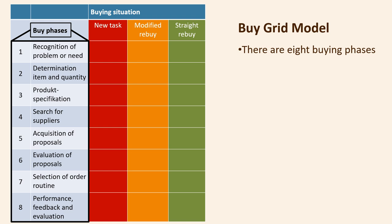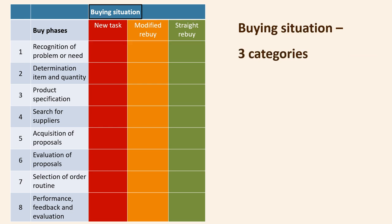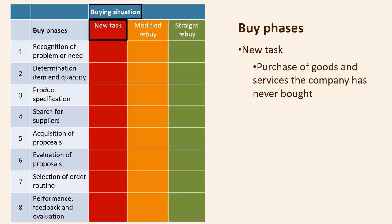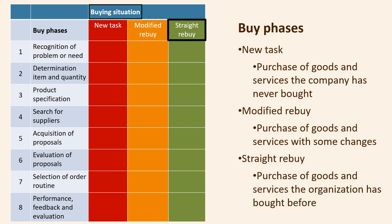The BuyGrid model contains eight buying phases and three categories of buying situations: new tasks, modified rebuy, and straight rebuy. New tasks involve buying goods and services the company has never previously bought. Modified rebuy occurs when members of the organization are not satisfied with the product previously purchased, or there have been changes to circumstances which impact the buying decision. A straight rebuy occurs when the company purchases a standard product or service the organization has bought many times before.